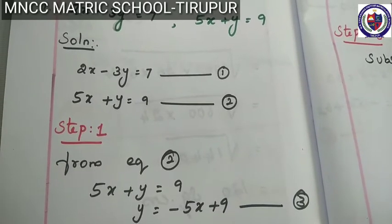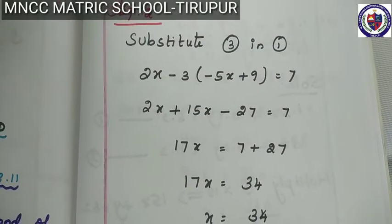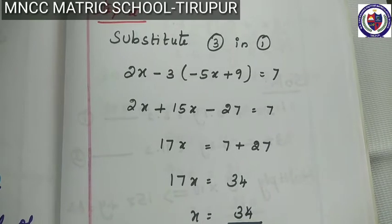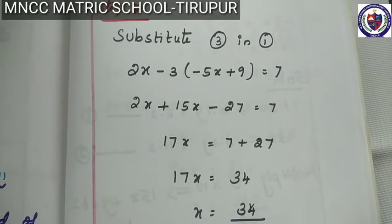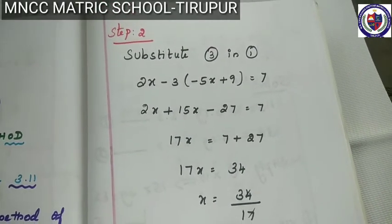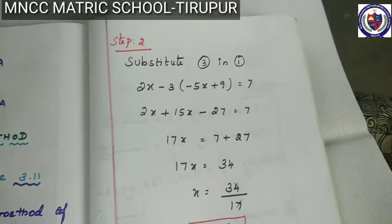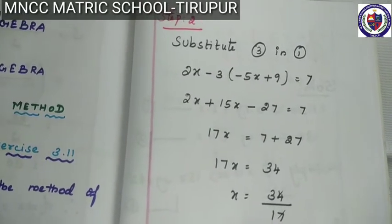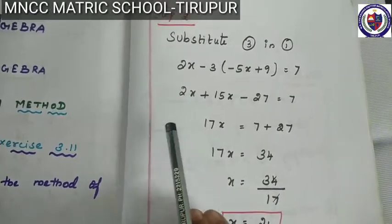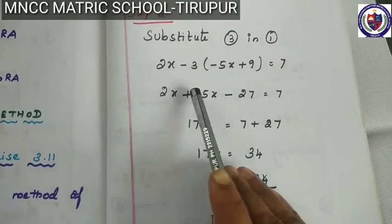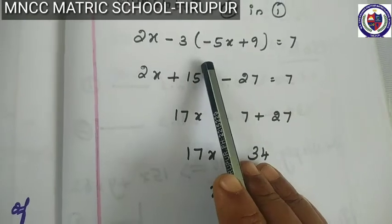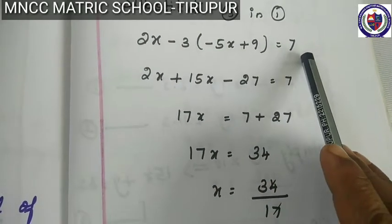Step number 2: substitute the value of the variable obtained in step 1 in the other equation and solve it. We found the value of y, so substitute equation 3 into equation 1. Equation 3: y is equal to minus 5x plus 9. Substitute in equation number 1: 2x minus 3y is equal to 7. So substitute the value of y: 2x minus 3 into (minus 5x plus 9) is equal to 7.